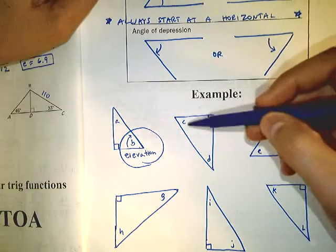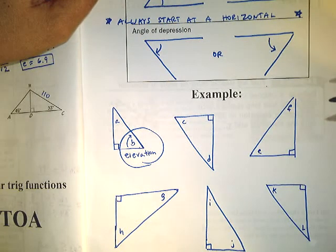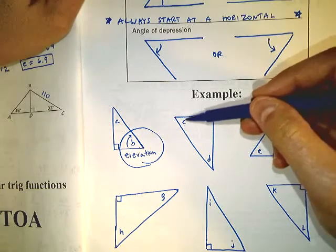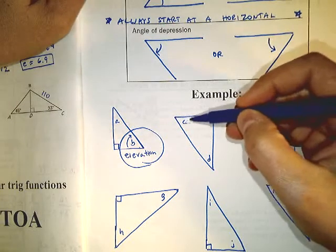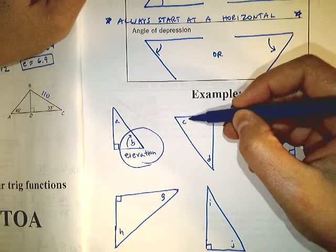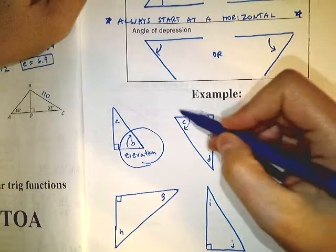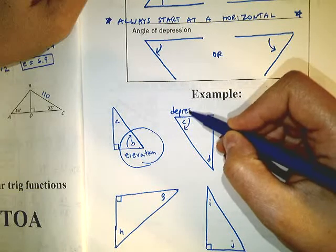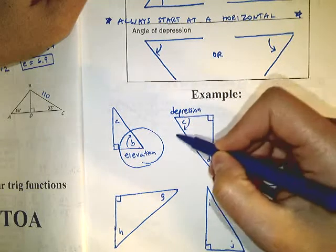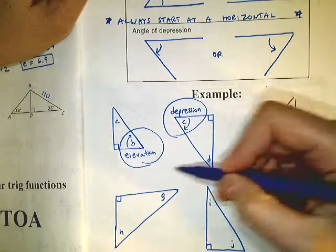In this triangle we have two reference angles: corners C and D. You have to start at a horizontal and rotate away from it. Corner C is the only one positioned next to a horizontal side — it starts at the horizontal and you rotate down, so this is an angle of depression. D is nothing; it does not have a horizontal reference frame.